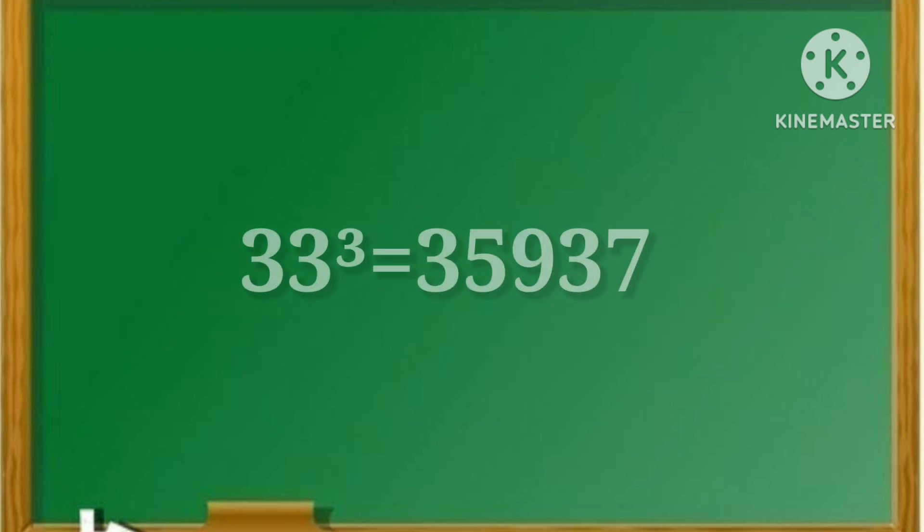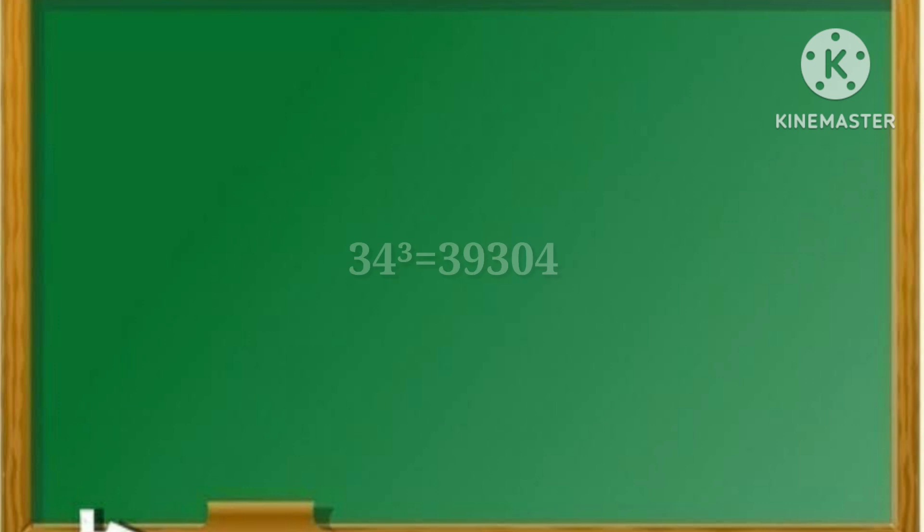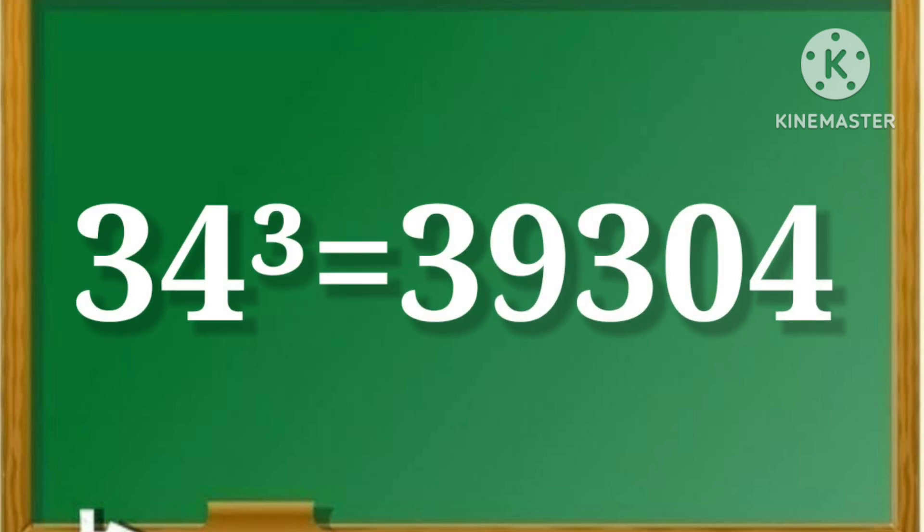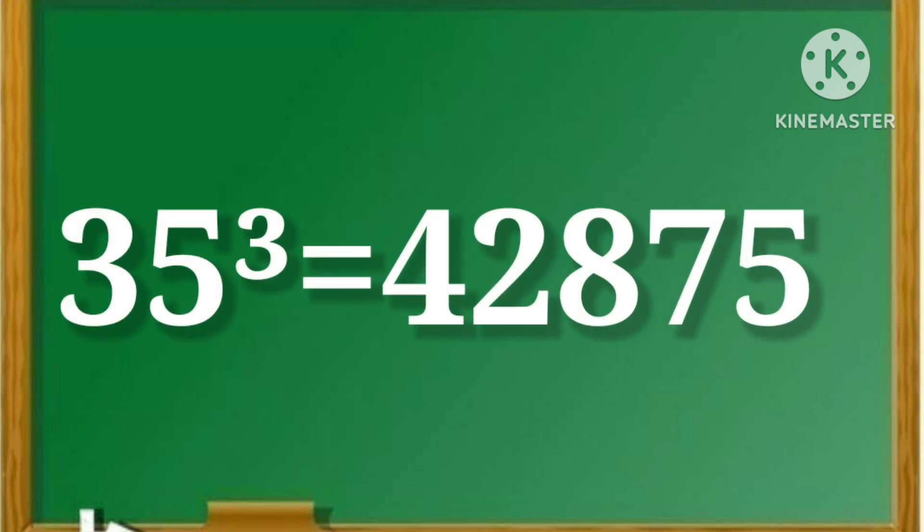33 cube is equal to 35,937. 34 cube is equal to 39,304. 35 cube is equal to 42,875.